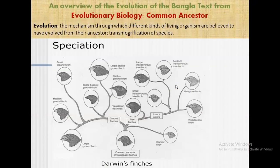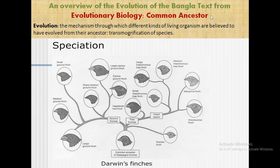Another thing I'd like to address — I've written: 'An overview of the evolution of the Bangla text from evolutionary biology: the common ancestor.' I brought this because it is very much related to the same evolution we have witnessed with our language. Evolution is basically the mechanism through which different kinds of living organisms are believed to have evolved from a common ancestor — or you can call it a transmogrification of species.